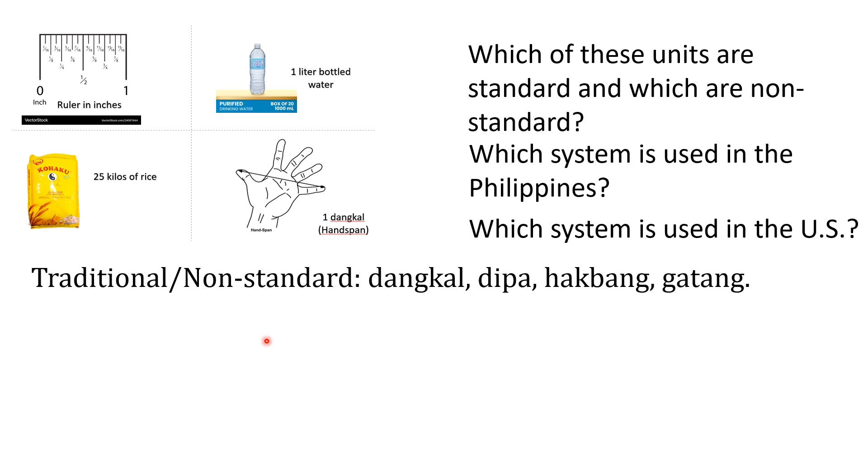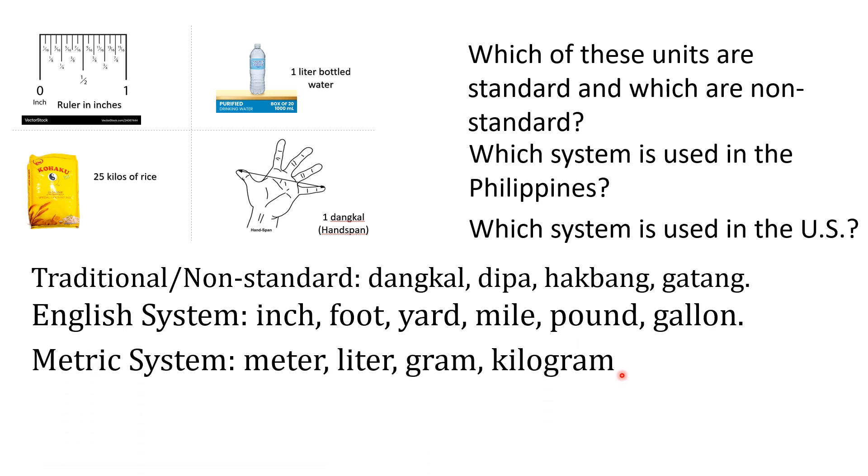So ito yung traditional or non-standard na ginagamit sa kanayunan. Another is the English system. So example ng English system, we have inch, foot, yard, mile, pound and gallon. For metric system naman, we have meter, liter, gram and kilogram.